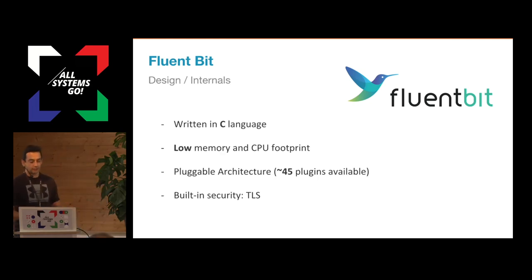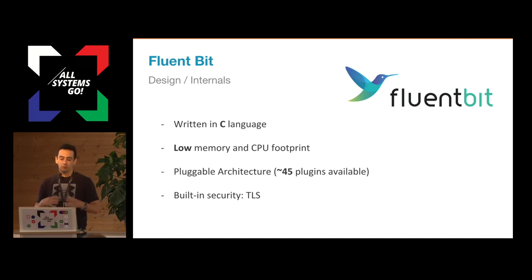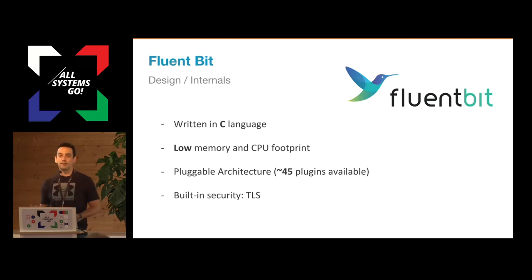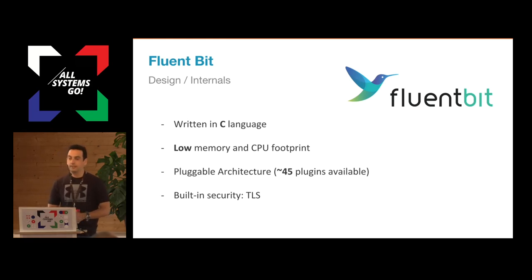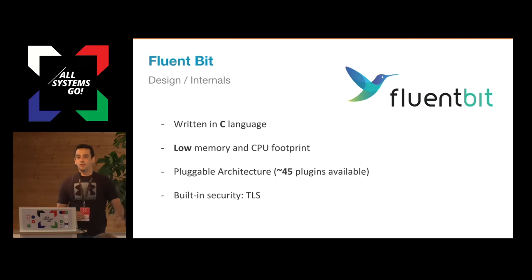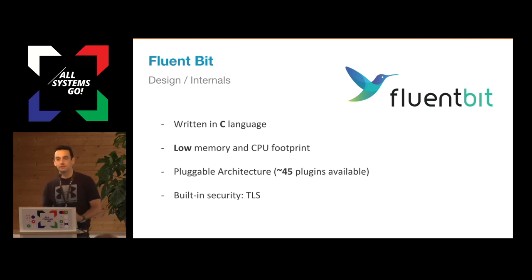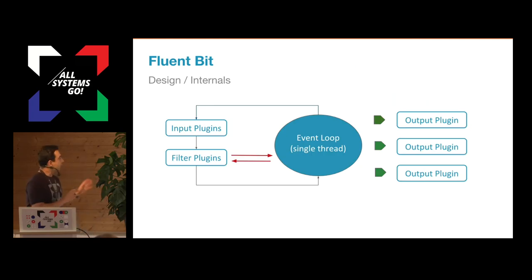FluentBit is written in C, tied to low memory and CPU footprint, and has a pluggable architecture. When you have a log processor, it's important to understand that the goal is not to replace syslog, not to replace systemd or journald. As a log processor, your goal is to integrate different sources of information in one place — to accomplish that, you need to talk TCP, UDP, read logs from the file system, talk to the systemd API, and so on. It also has built-in security with TLS, because when you're shipping logs outside you're talking to third-party services like Stackdriver or Elasticsearch, and nobody wants to use plain HTTP.